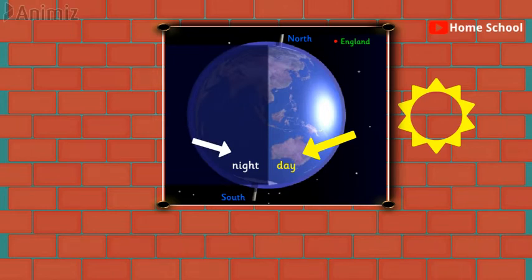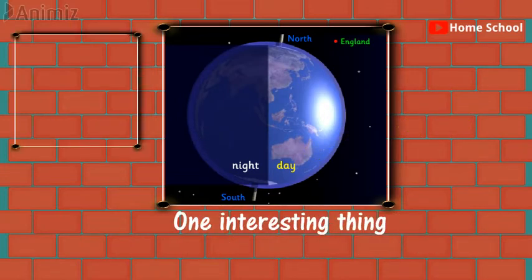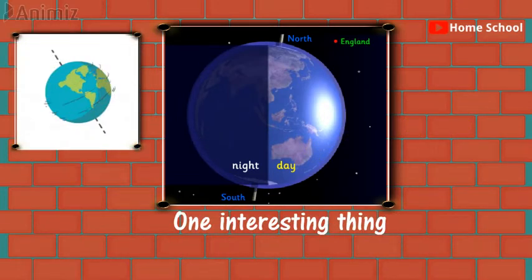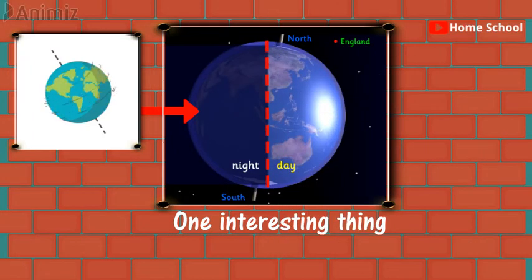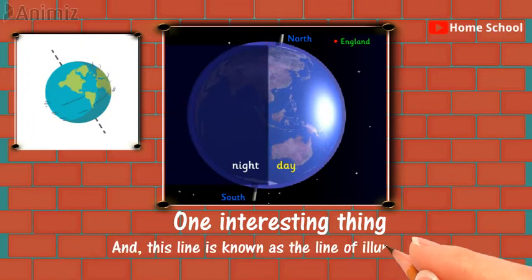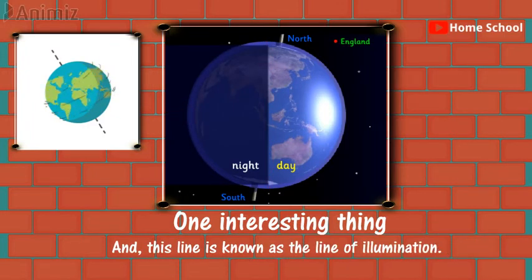Here at this point, one interesting thing is that as the Earth is tilted at a certain angle, a part of it comes under a shadow. The shadow falls in such a way that a line seems to separate day from night. And this line is known as the line of illumination.